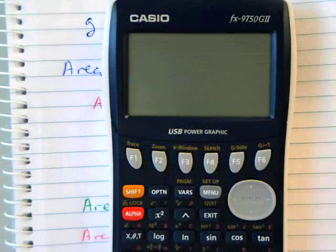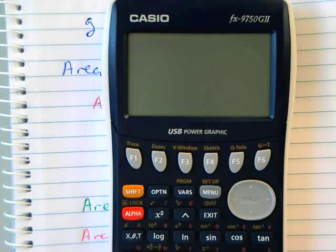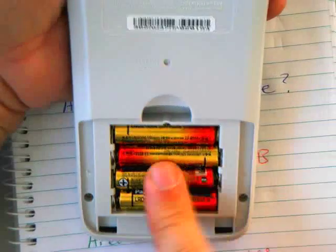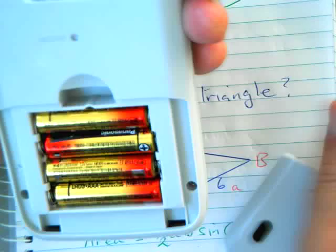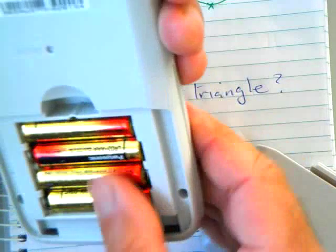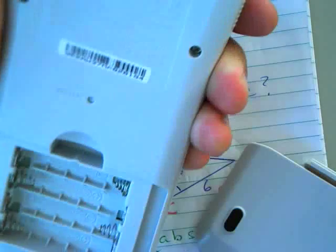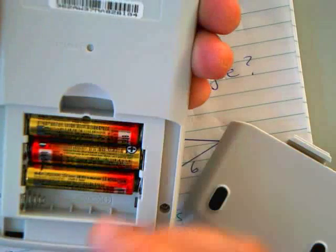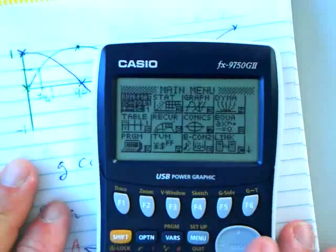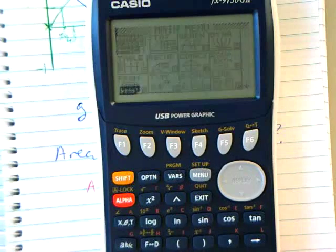So to set your calculator what you do is you turn it on for a start that's always a good move. When you first get your calculator you're going to press one for the run menu which is the normal doing math stuff.